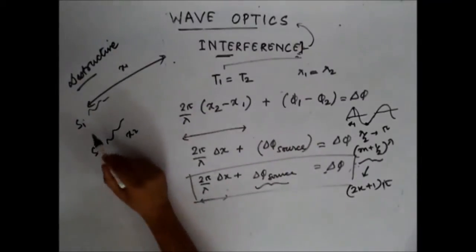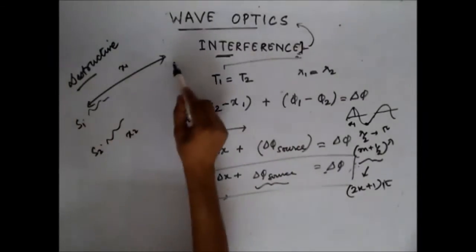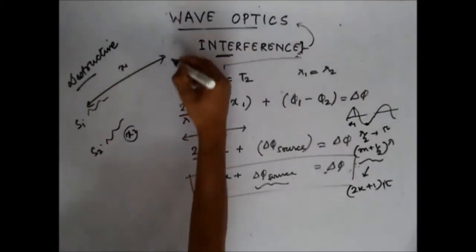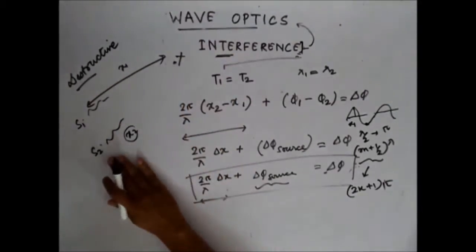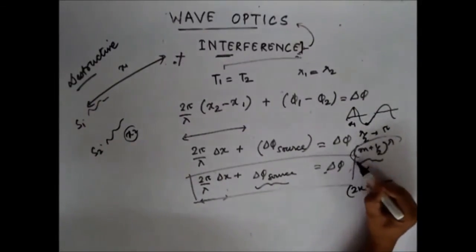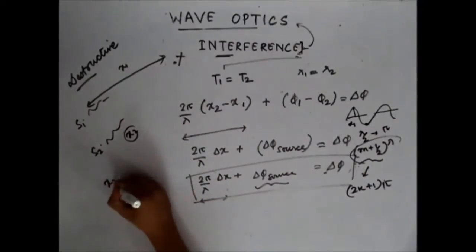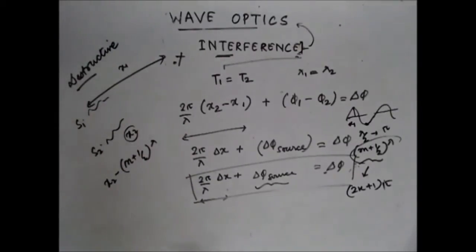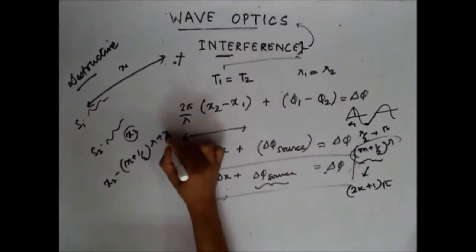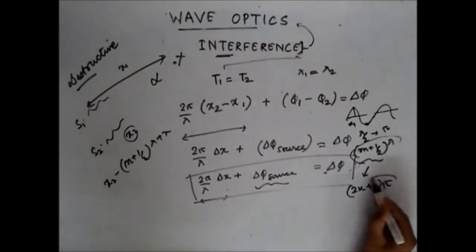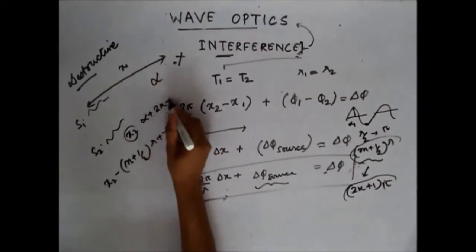Let's say this distance is x1, and x2 arrives at point x such that x2 is at a distance (m + ½λ) ahead of S1. That means x2 is (m + ½λ) units ahead of x1. So in terms of phase, if S1 has a phase of alpha, then S2 has a phase of alpha plus (2k+1)π.